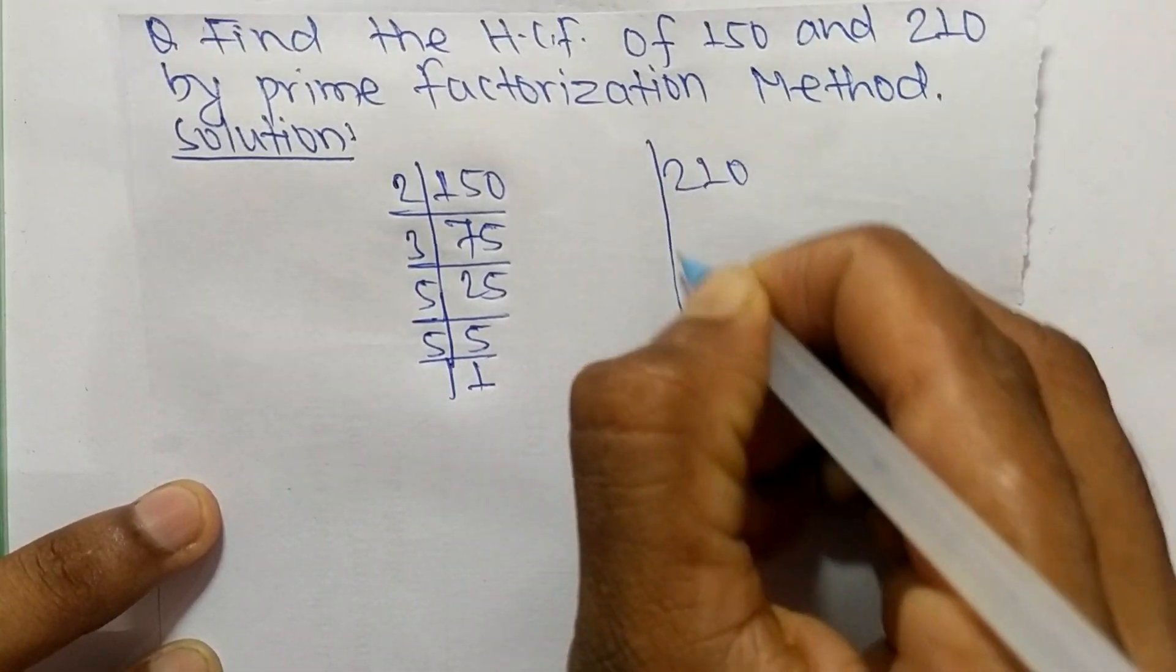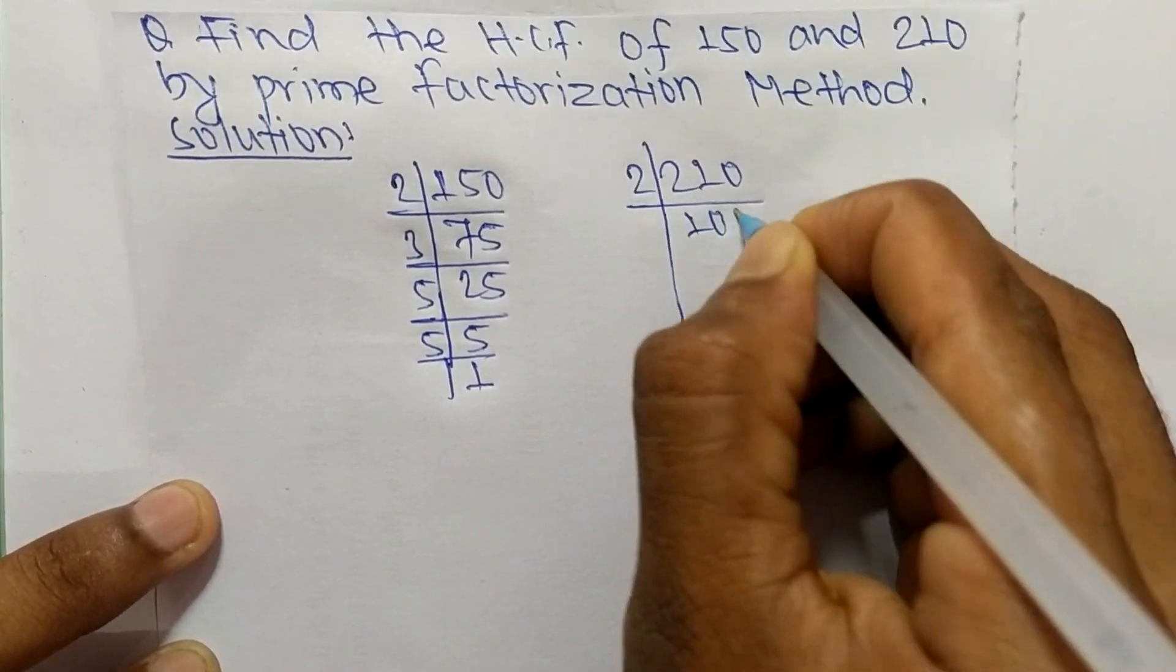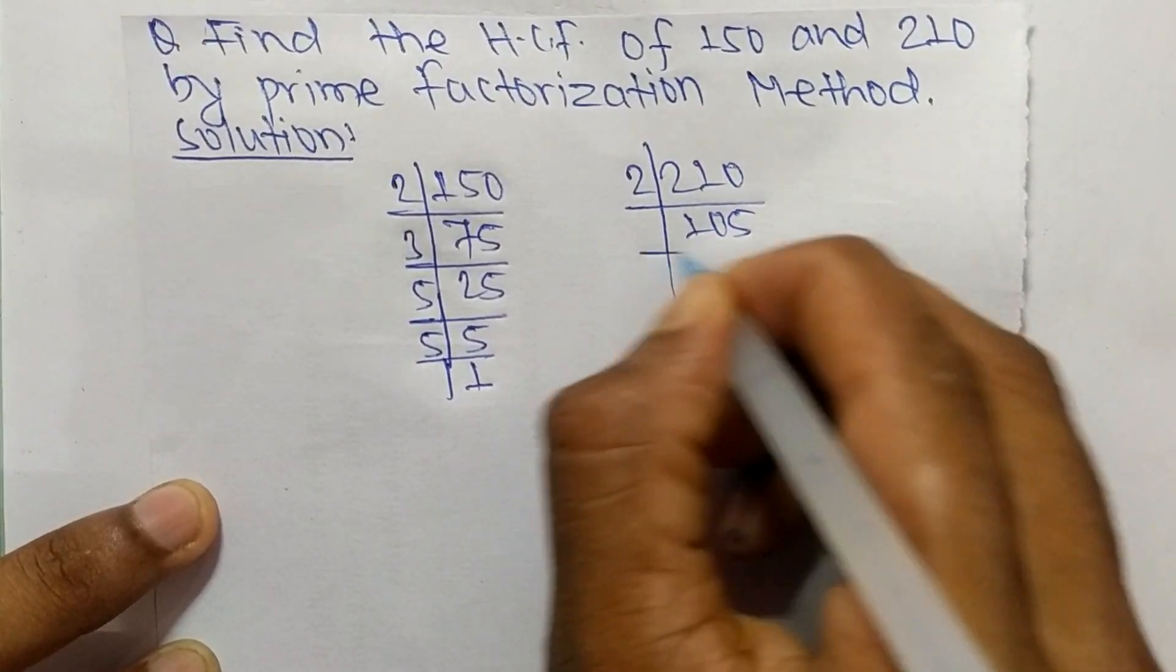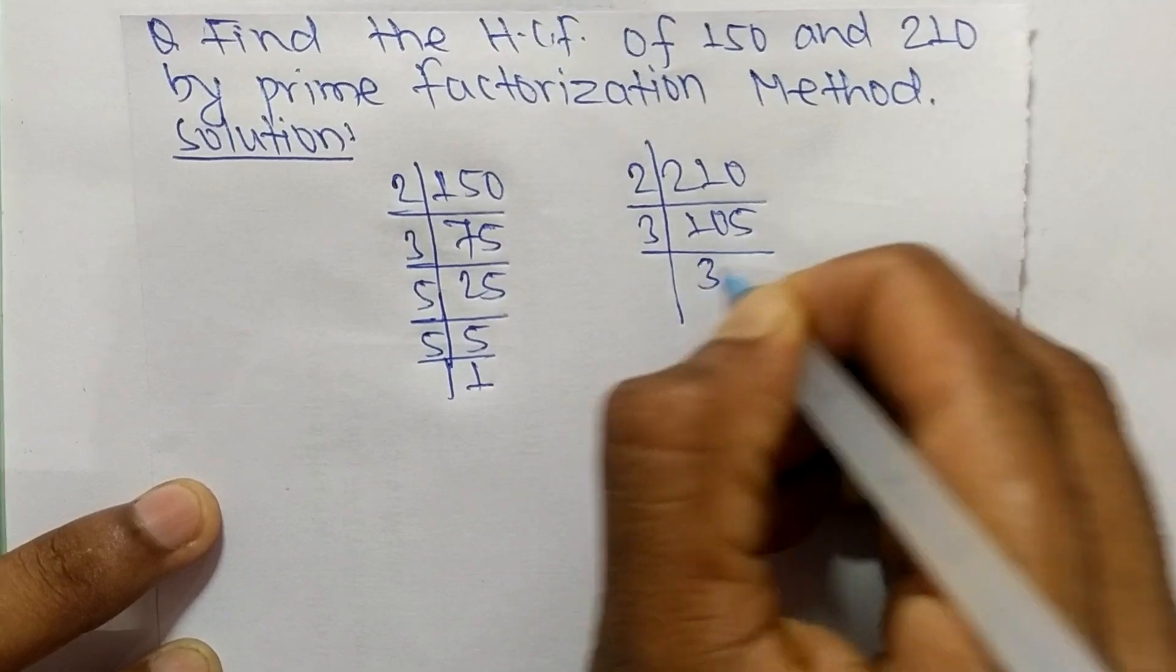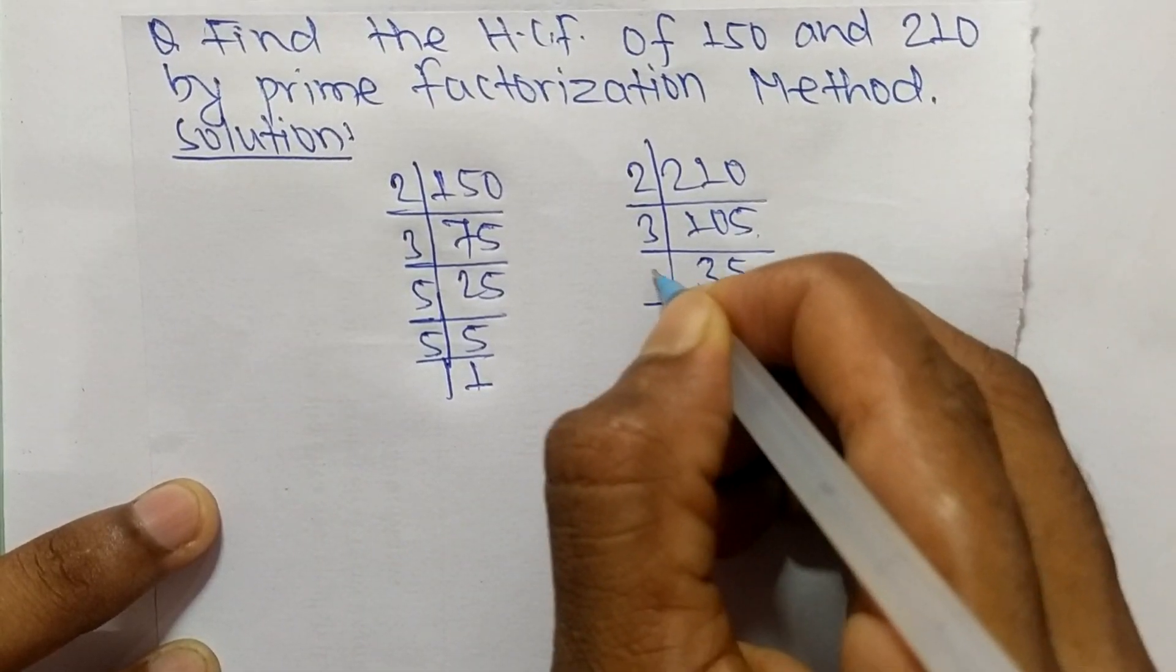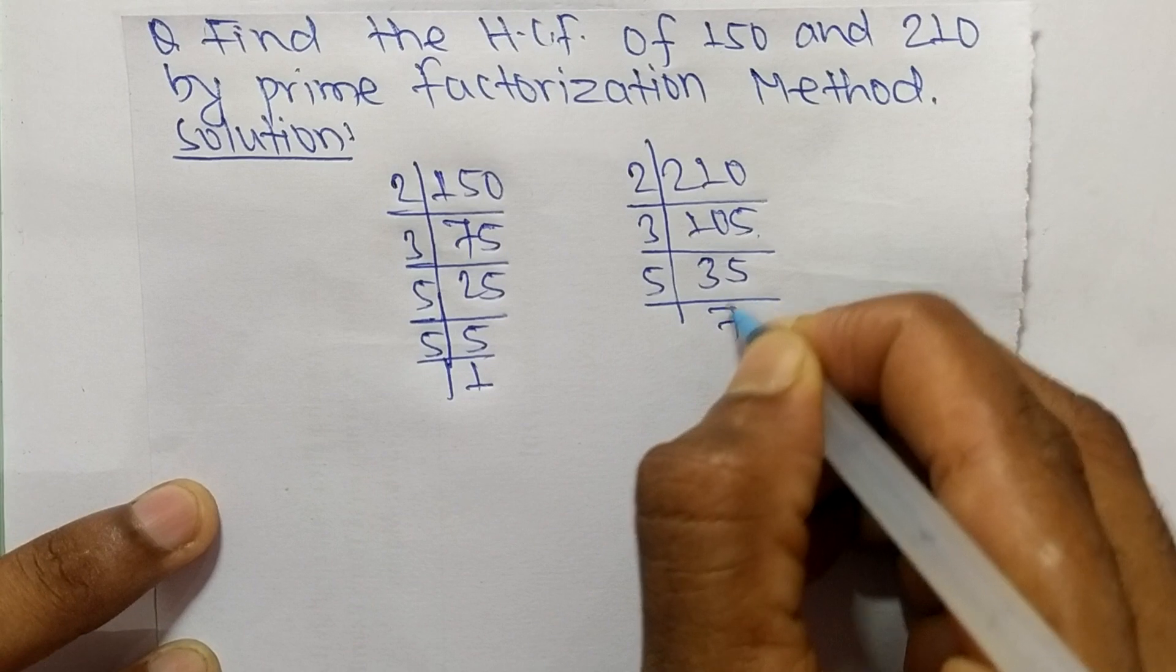The prime factors of 210 are: 2 times 105 equals 210, 3 times 35 equals 105, 5 times 7 equals 35, and 7 times 1 equals 7.